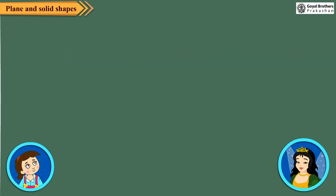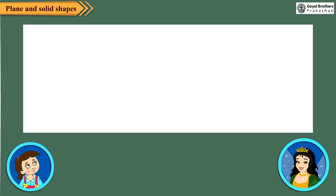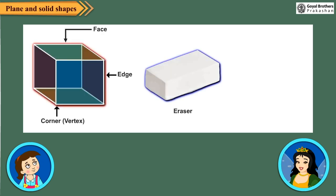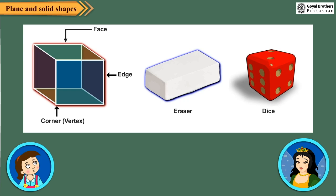Why? Because each one of these can be drawn on a plane paper. In fact, we have another kind of shapes which cannot be drawn on a sheet of paper. For example, box, eraser, dice. These are called solid shapes.